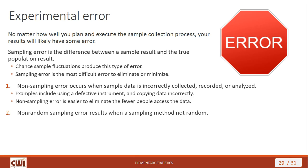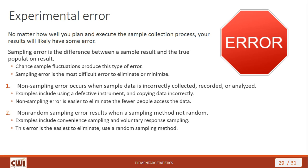The other type is non-random sampling error, which results when a sampling method is not random. Convenience sampling and voluntary response sampling are examples of non-random sampling errors. This is the easiest error to eliminate — just use a different sampling method. In all of your experiments, understand you're always going to have some sampling error, and you may have some non-sampling error. But there's really very little excuse for having any non-random sampling error because it's easy to get rid of — just use a better sampling method.